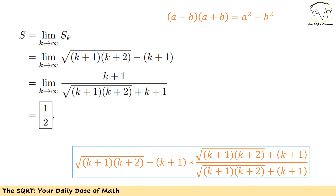So the fraction has k+1 on top, and √((k+1)(k+2)) + (k+1) on the bottom. As k goes to infinity, the top behaves like k, the bottom behaves like √(k²) + k = k + k = 2k. So the limit is k over 2k, which equals 1/2. That's our final answer.